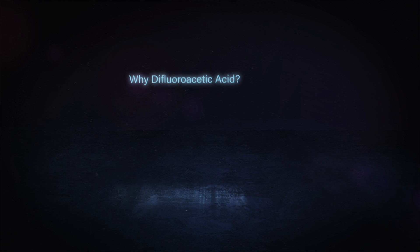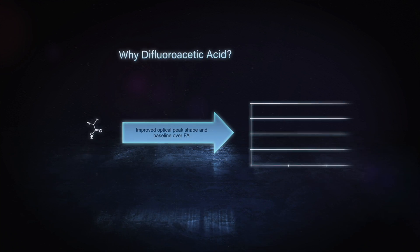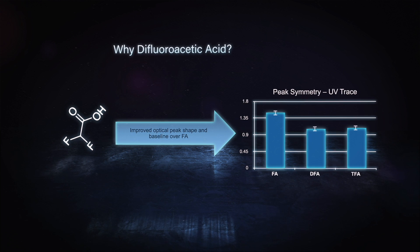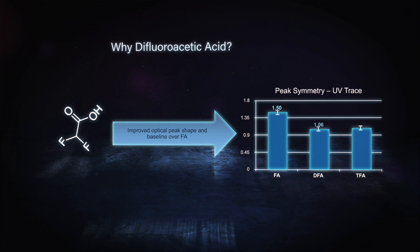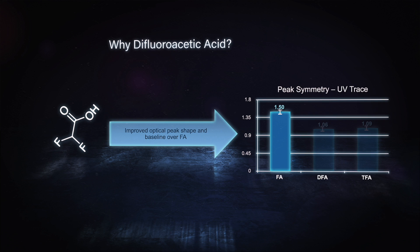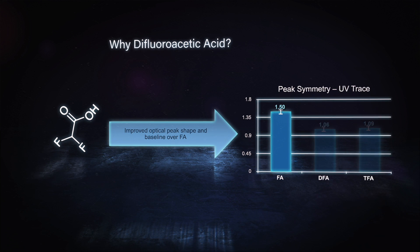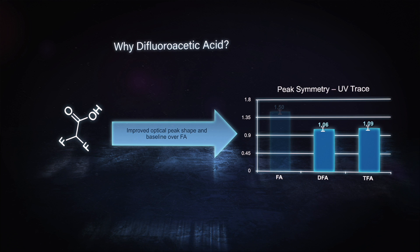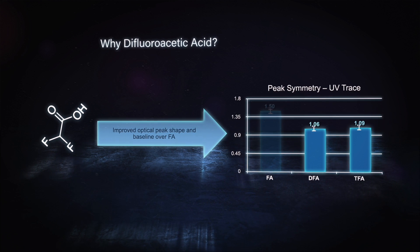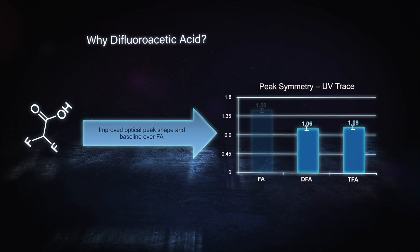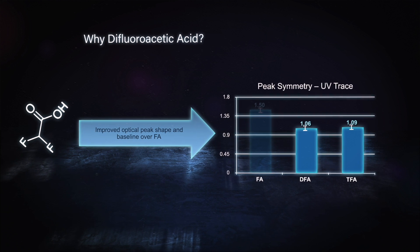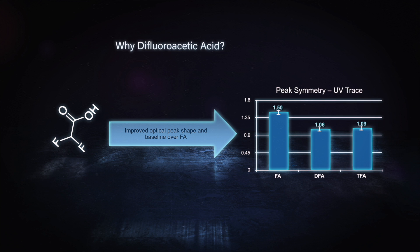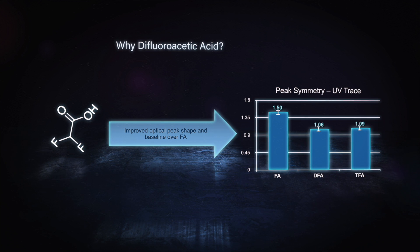In this slide, we're looking at peak shape or asymmetry between TFA, formic acid, and DFA. If you compare the peak symmetry for formic acid, it's pretty poor — you get a peak symmetry of 1.5, which we'd expect because we know it doesn't produce sharp peaks. But when you compare TFA and DFA, they're pretty equivalent; the DFA is slightly better, but I'd say they're comparable. So that's fairly promising. In UV, TFA has been the gold standard, but the DFA looks really good.